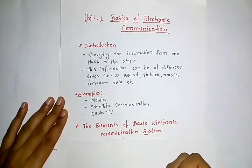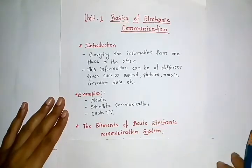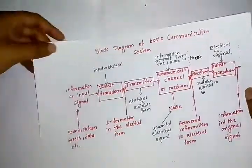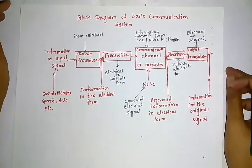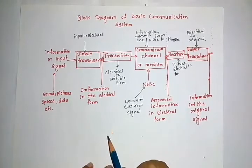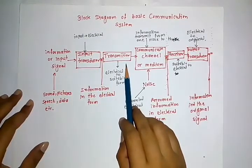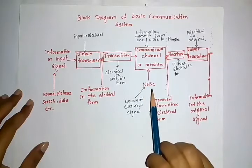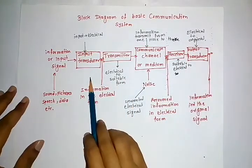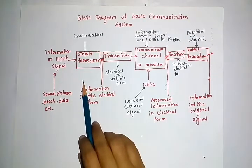The next important topic is the elements of a basic electronic communication system. We will study the block diagram and its detailed description. The blocks in the block diagram of a basic communication system are: input transducer, transmitter, communication channel or medium, receiver, and output transducer.